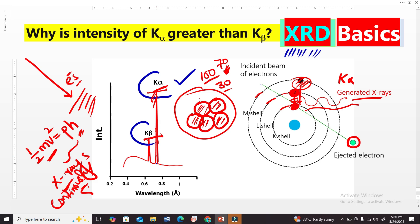The shapes are the same, so this means that the K-alpha intensity is very, very high as compared to K-beta. This is why we say that K-alpha intensity is greater than K-beta, and this was the reason behind that.